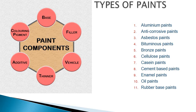The constituents of paint are base, filler, vehicle, thinner, additive, and coloring pigments. We have seen the different types of base, vehicle, and coloring pigments; filler, thinner, and additive are common in general. Because of these ingredients, various types of paints can be manufactured.